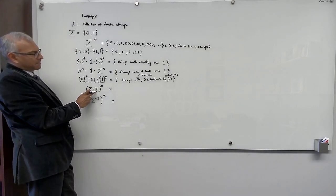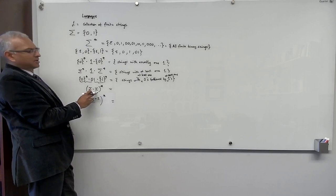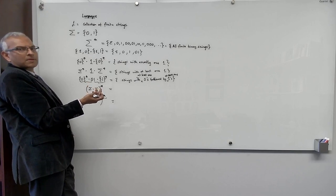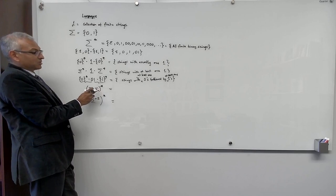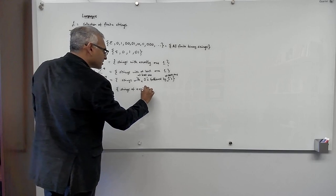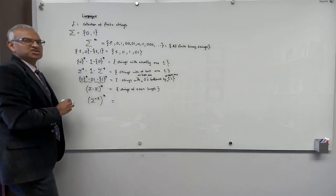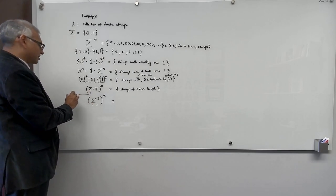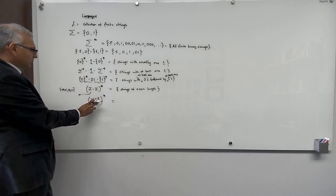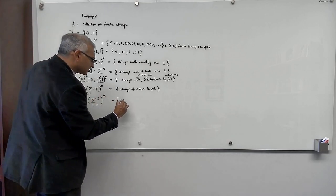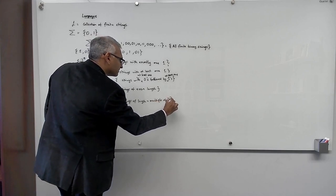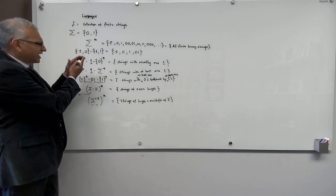Sigma concatenated with sigma — σσ — is all binary strings of length two. Taking the Kleene star, you concatenate all binary strings of length two, which gives strings of even length, including length zero. For sigma cubed — σσσ — that is all binary strings of length three. Taking the Kleene star gives strings of length equal to a multiple of three. If you got all of these, fantastic — you are an expert in regular expressions!